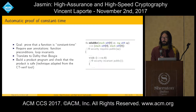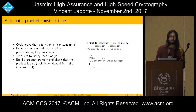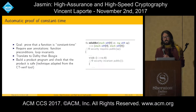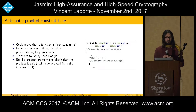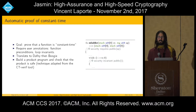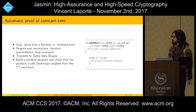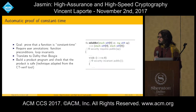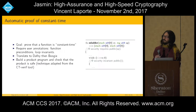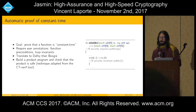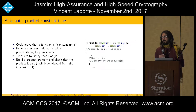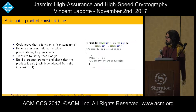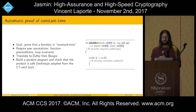Another property important for Jasmine programs is constant time — meaning no branching and no memory access depends on secrets. As before, we have no a priori knowledge about what is secret and what is public, so we require the user to annotate each function with a precondition stating which of the arguments are public, and anything that is not public is considered secret. Similarly, we translate the Jasmine program into Dafny and then Boogie. At the Boogie level, we have implemented a verifier that uses the same technique as the CT-verif tool that checks for constant time for LLVM programs.